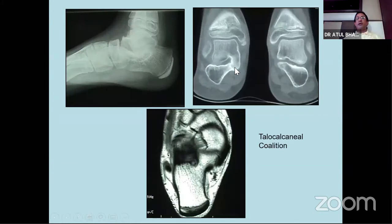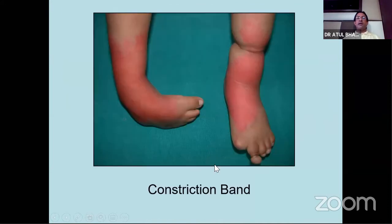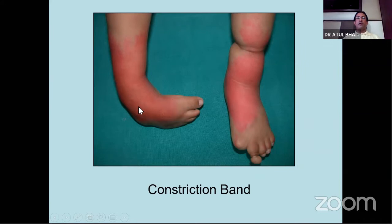This is an example of a calcaneonavicular coalition on the medial facet - this is a common coalition you get. You can see there is narrowing but no coalition, and you confirm this with a CT scan. Don't forget to look at what is called congenital amputees - look for constriction bands. If you get a case like this, it is called amniotic band syndrome. It can be a spot diagnosis - don't say this is a club foot, say this is a syndromic club foot because there are these interdigital bands which may be present elsewhere in the body. They lead to auto amputation.